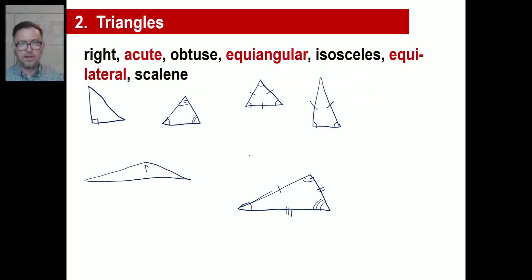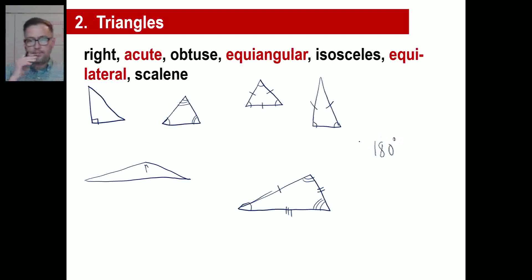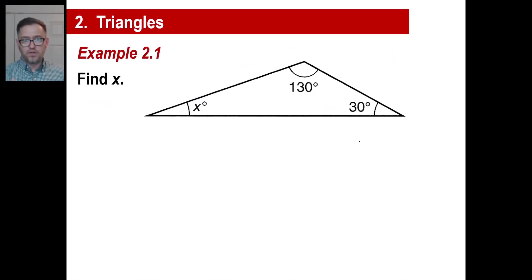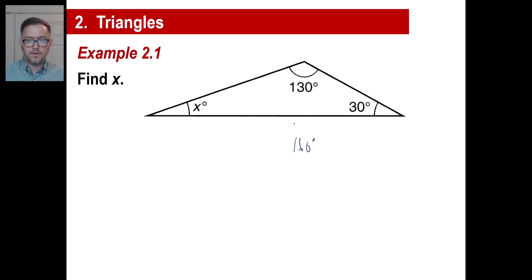One last thing about triangles: the total measure of all angles inside a triangle is 180 degrees. Make sure you know that all three angles add up to 180 degrees. For example, if two angles are 130 and 30 degrees, that's a total of 160, so X equals 20 degrees.